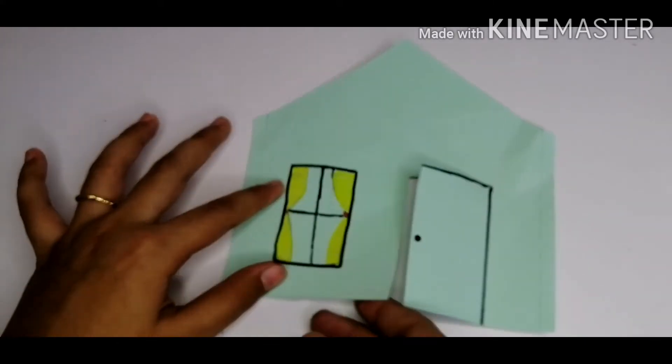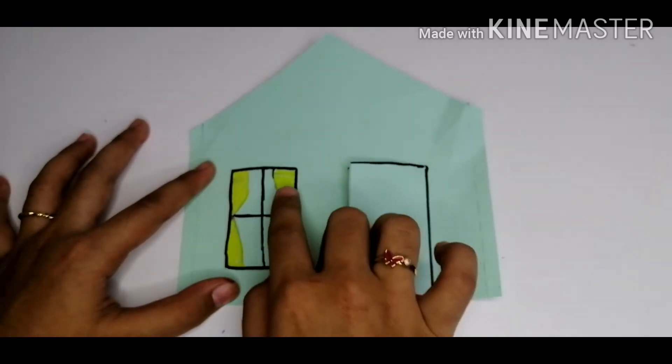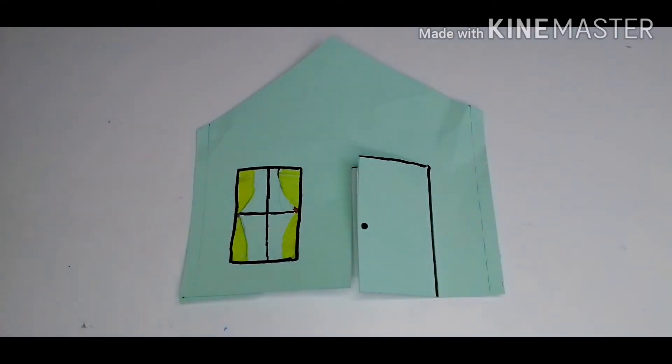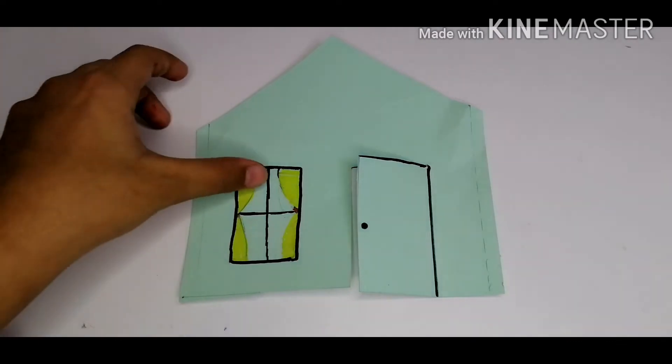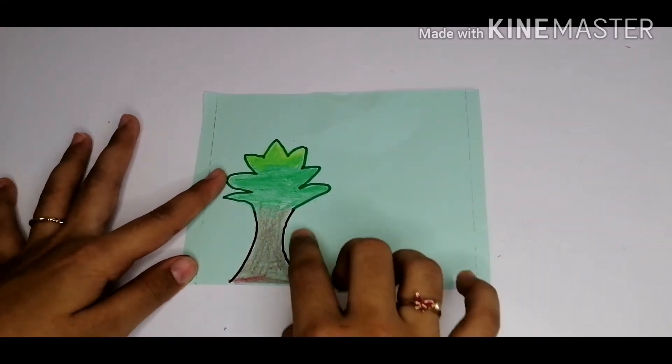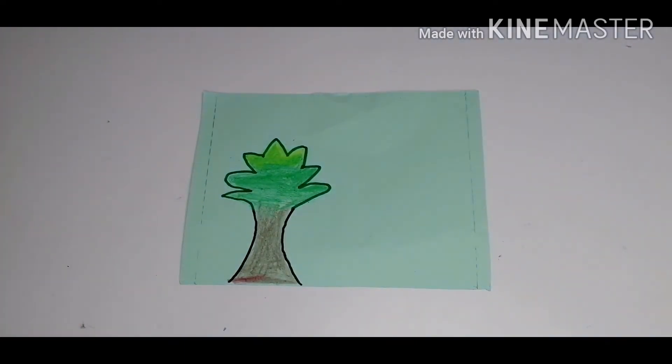And this is the back side of the house. Here also I have added curtains. This is a bit simple. And the last side, I have drawn a tree so it looks more nice. You can draw bushes or animals.